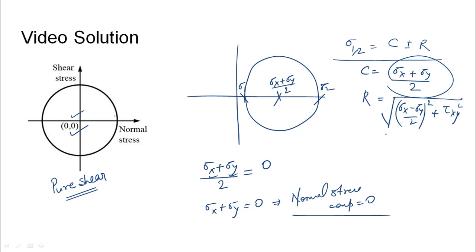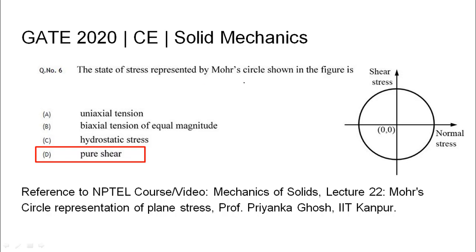So the state of stress represented by Mohr's circle given in the figure, the correct option was found out as D, pure shear. The relevant NPTEL reference has been listed.